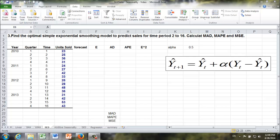Question 3, find the optimal simple exponential smoothing model to predict sales for time period 2 to 16, calculate MAD, MAPE, and MSE.